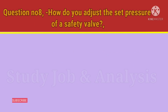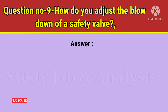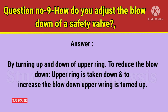Question number 8: How do you adjust the set pressure of a safety valve? Answer: The safety valve is set by adjusting the compression of the spring. Question number 9: How do you adjust the blowdown of a safety valve? Answer: By turning up and down of the upper ring. To reduce the blowdown, the upper ring is taken down; and to increase the blowdown, the upper ring is turned up.